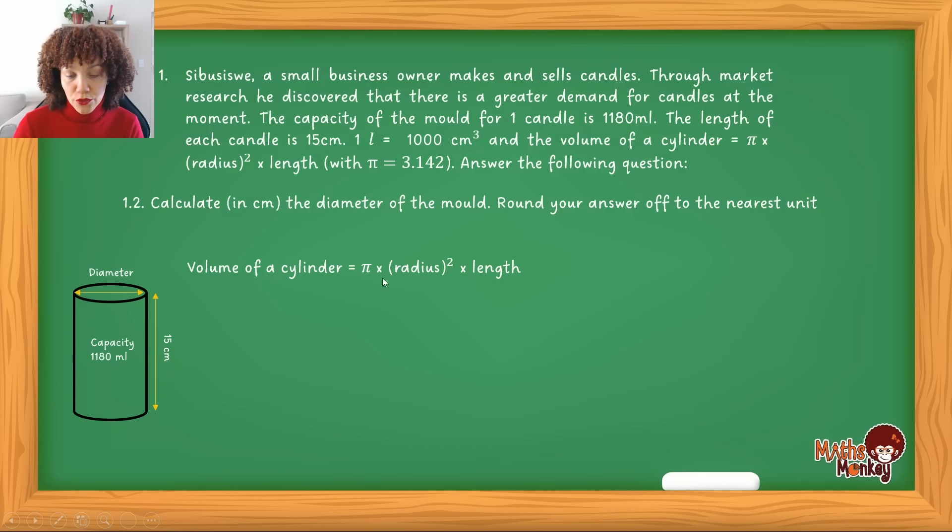Then pi, which is 3.142, that's fine. Radius is actually what we do not have. Because remember, the diameter is what's being asked, and the diameter is two times radius. So ideally in this formula, we are looking for the radius.